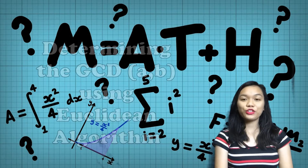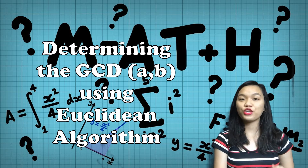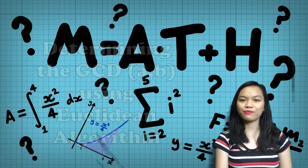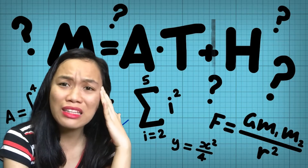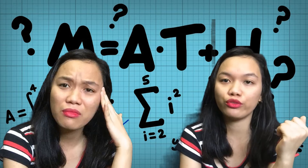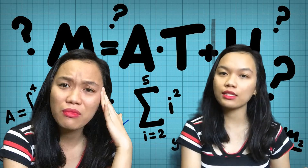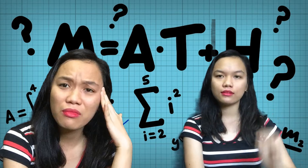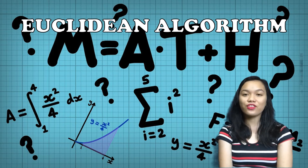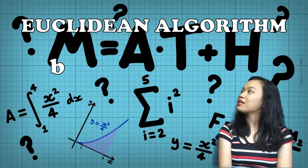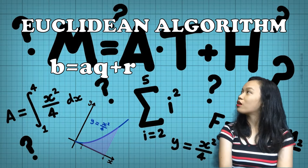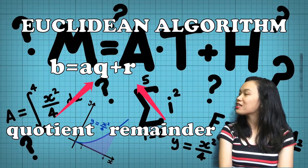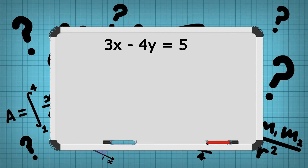First step: determining the GCD of A and B using the Euclidean algorithm. The Euclidean algorithm goes by the form B equals AQ plus R, where Q is the quotient and R is the remainder. In getting the greatest common divisor of A and B, we have to first identify our A and our B.